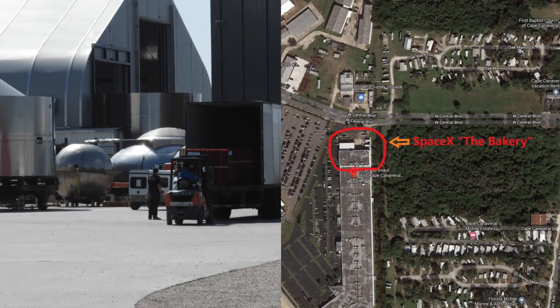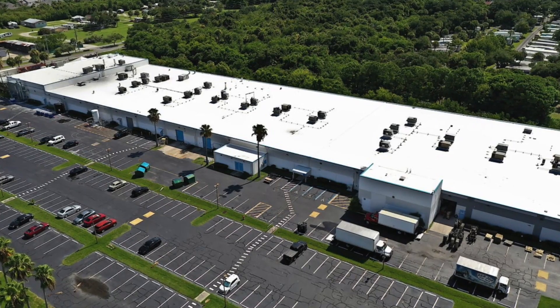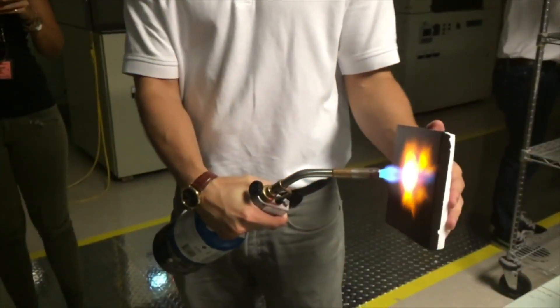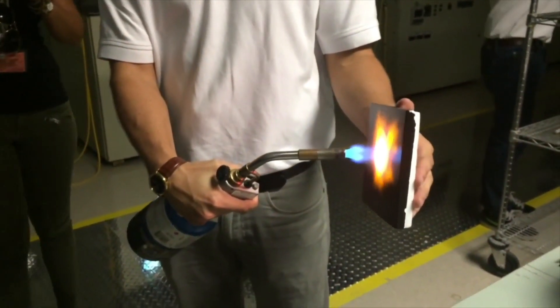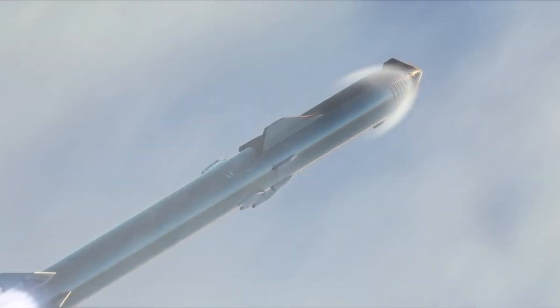From the outside, it looks like a somewhat normal warehouse, except for the external chemical and piping installations. But inside, workers are creating heat shield tiles for what will be the most advanced rocket the world has ever seen.